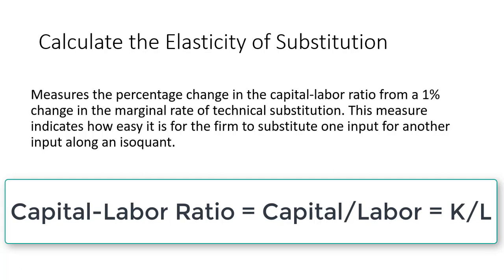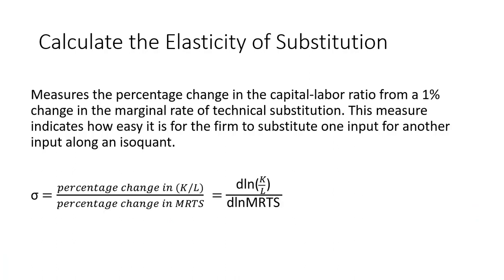This measure indicates how easy it is for the firm to substitute one input for another input along an isoquant. In terms of a formula, the elasticity of substitution, σ, equals the percentage change in the capital labor ratio (K/L) divided by the percentage change in the marginal rate of technical substitution.